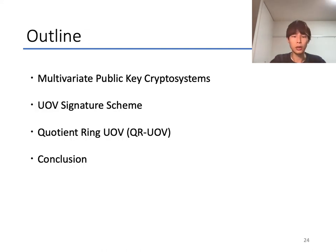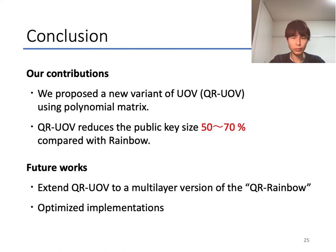Finally, I conclude this presentation. In this research, we propose a new variant of UOV using polynomial matrices, and QR-UOV reduces the public key size from 50% to 70% compared with Rainbow. Our future work includes extending QR-UOV to a multi-layer version and optimizing implementations. And that's all. Thank you for listening.